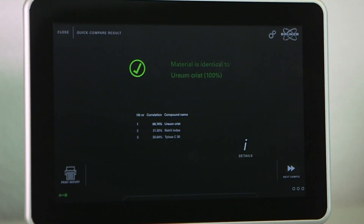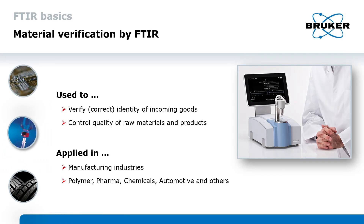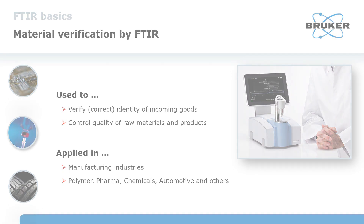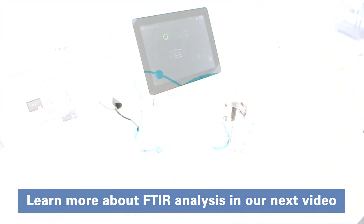FTIR is a standard technique to ensure the correct chemical identity and quality of raw materials and products. It is used in virtually any manufacturing industry worldwide to control the quality of incoming goods and final products. Thanks for watching — see you next time.